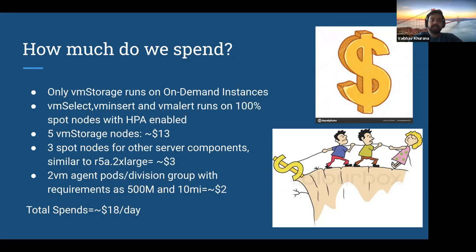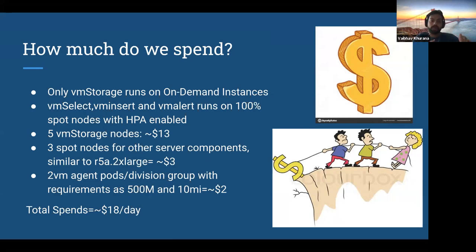And you don't compromise on availability. Whenever we talk about cost, people say availability will take a hit. That's not the case here. We've made each and every component HA — multiple replication factors, replications across your data storage nodes, multiple VM Inserts, multiple VM Selects, HA on VM Agent pods. With all that, you're spending only a fraction of what you would have spent with the same amount of data on a vanilla Prometheus architecture — or even Thanos or Cortex, given the complexities of those architectures.